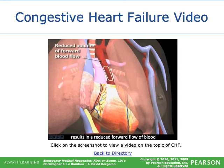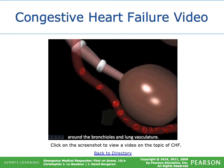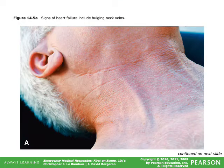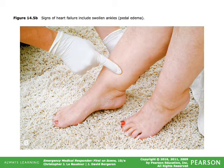Decreased left ventricular function — secondary to an MI or hypertension — results in reduced forward blood flow into the aorta and backup of pressure into the pulmonary vasculature, causing fluid accumulation in the interstitial spaces around the bronchioles and lung vasculature — pulmonary edema. Jugular venous distension refers to visibly bulging veins on the neck. Pedal edema presents as massive swelling of the lower extremities; severity is graded as pitting or non-pitting on a plus-one to plus-three scale.